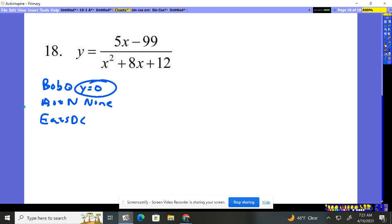So it's going to be y equals zero. So for the horizontal, we say there's a horizontal at y equals zero.